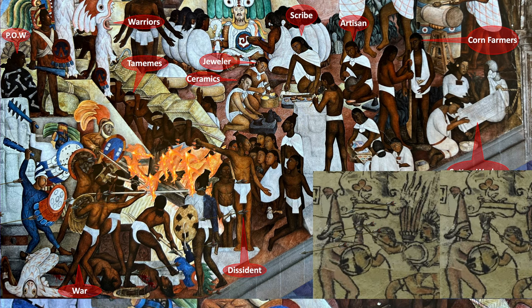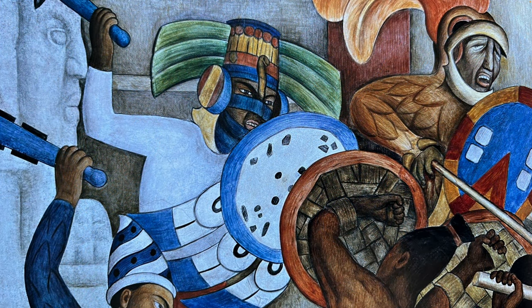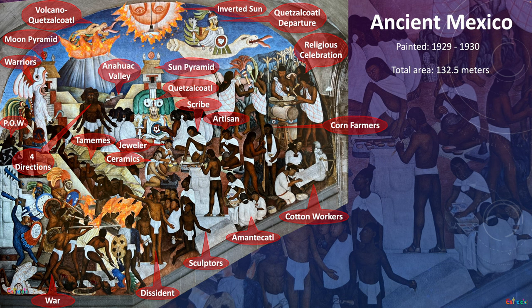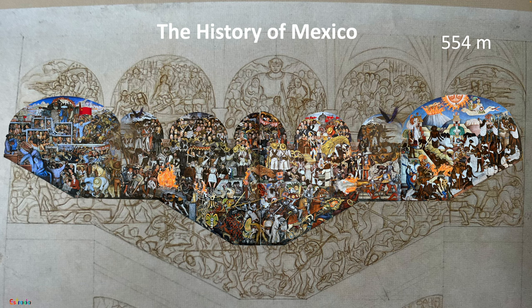Diego Rivera was fascinated with Mesoamerican history — he personally collected over 60,000 Mexican artifacts. That covers the first panel, Ancient Mexico. Thanks for watching; another video describes the entire mural with more than a hundred historical figures spanning hundreds of years of Mexican history.